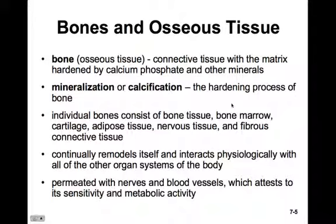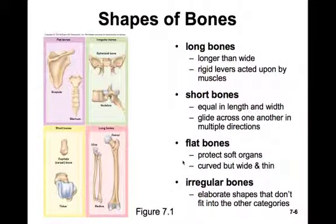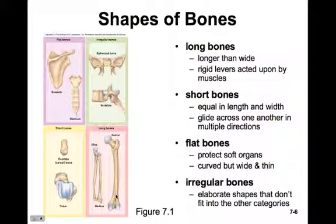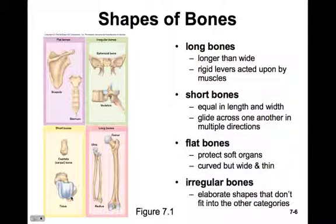If you've ever broken a bone, you'll know they're permeated with nerves and blood vessels, which is important for metabolic activities. Bones come in several classical shapes. Long bones are the bones of our limbs — longer than they are wide — and make rigid levers acted upon by muscles. The femur is the longest bone; the radius and ulna are also long bones. Short bones are equal in length and width, like the carpal and tarsal bones, and generally glide across one another.